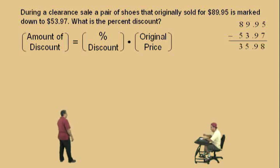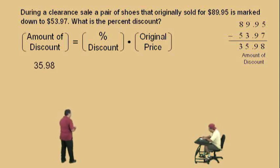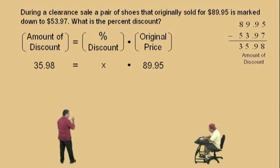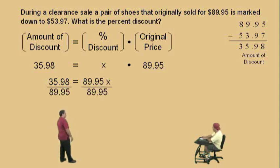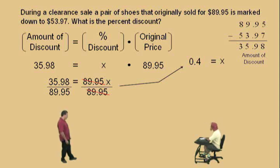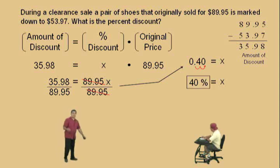What did you get, Charlie? $35.98. That's right. So the amount of discount is $35.98. Our percent discount is what we're trying to find, so we'll let that be x. And what was the original price, Charlie? $89.95. That's right, that's the price before the markdown. And so, remember, x times 89.95 is the same as 89.95x. And how do we solve this, Charlie? Divide by 89.95. That's right, those cancel. Now, what's this quotient? 0.4. Very nice. And that's x. Now, remember, we're trying to find the percent discount. And how do we change that decimal to a percent, Charlie? Move right twice. Don't forget to put that placeholder there. And so our answer is 40%. That is our percent discount.